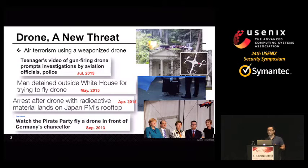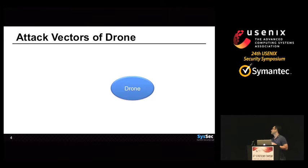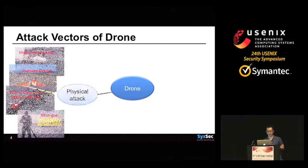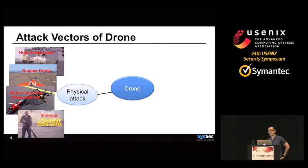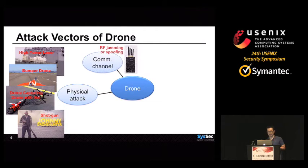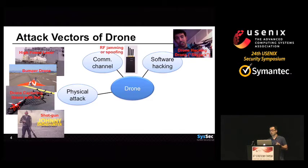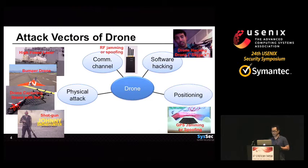So these days, many governments are interested in shutting down these drones. Until now, several attacks have been proposed. The first one is physical attack, such as shooting with a gun, capturing with a net, and destroying them using high-power laser or bumper drone. RF jamming and spoofing can cause denial of service or taking control of drones through the wireless communication channel. Software hacking is also possible, because a drone is also a kind of embedded system. And some drones are equipped with a GPS receiver to know their location. These drones can be guided to the attacker's place or some other places by GPS jamming or spoofing.